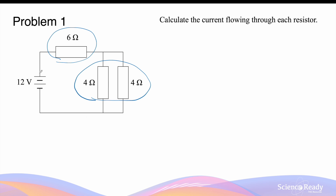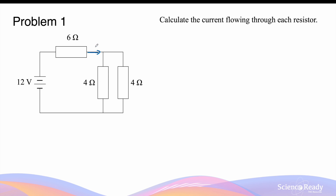The 6 ohm resistor is connected in series to the two resistors. Following the conventional current from the positive terminal of the battery, all of the current has to flow through the 6 ohm resistor, so it only has one path. In contrast, the two 4 ohm resistors are connected in parallel — as the conventional current exits the 6 ohm resistor, it reaches a junction where it splits into two different currents, which go through the two resistors before merging again and returning to the negative terminal of the battery.